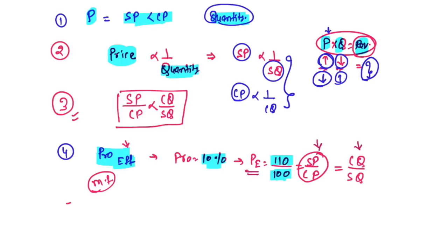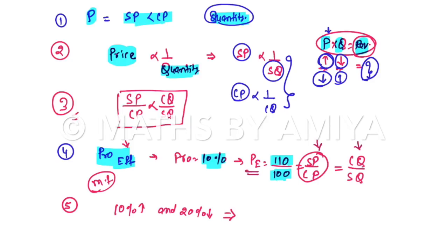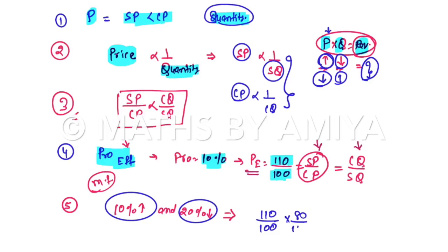In percentage, if you have a 10% rise and 20% fall on the same quantity, the final change can be found using the formula a + b + ab/100. But instead, we can use effect multipliers: 10% increase = 110/100, 20% decrease = 80/100. Multiply: 110 × 80 / (100 × 100) = 88/100, giving a 12% decrease. The fifth concept: to find the final effect, just multiply the intermediate effects.